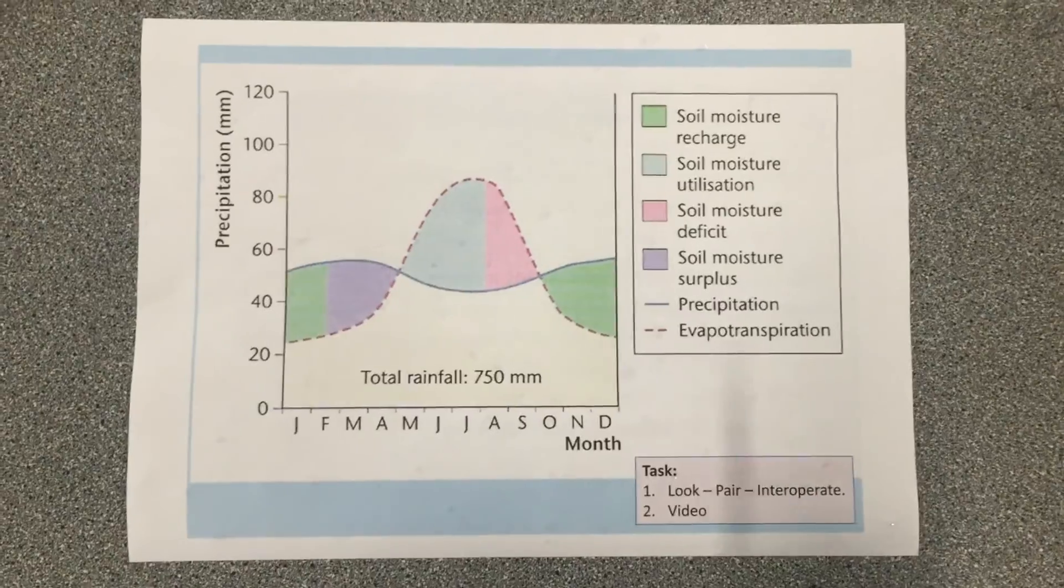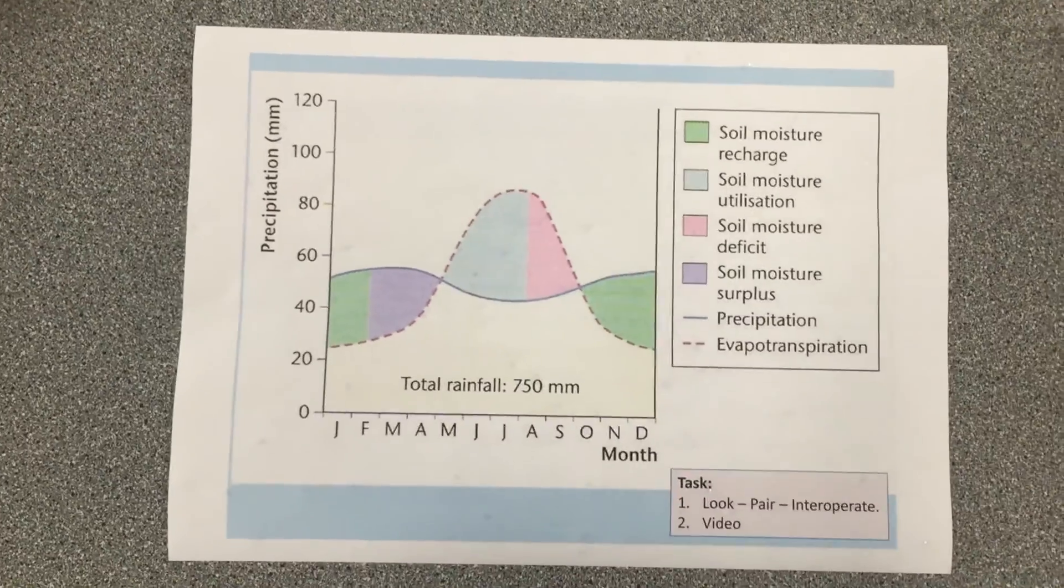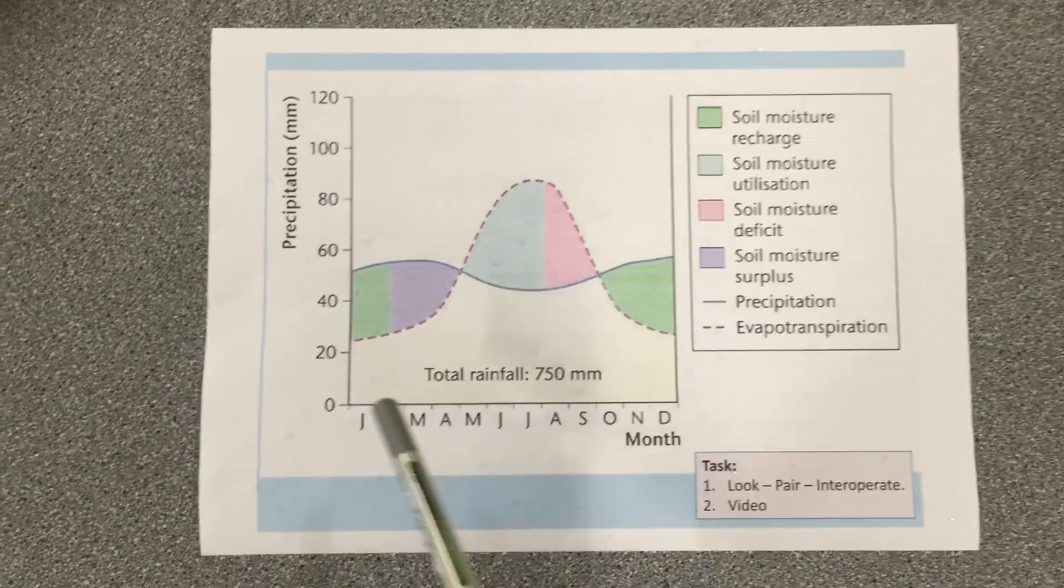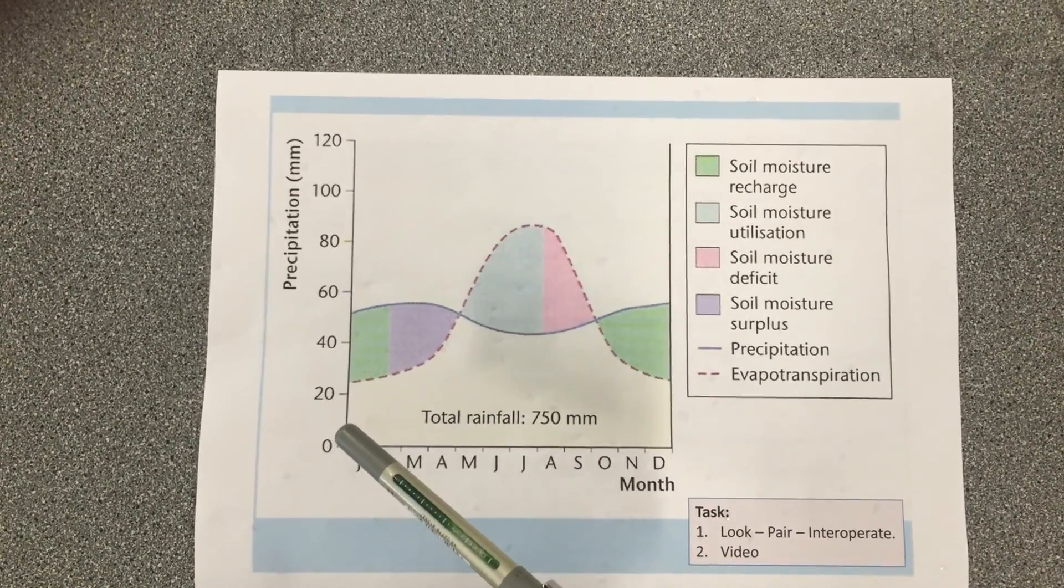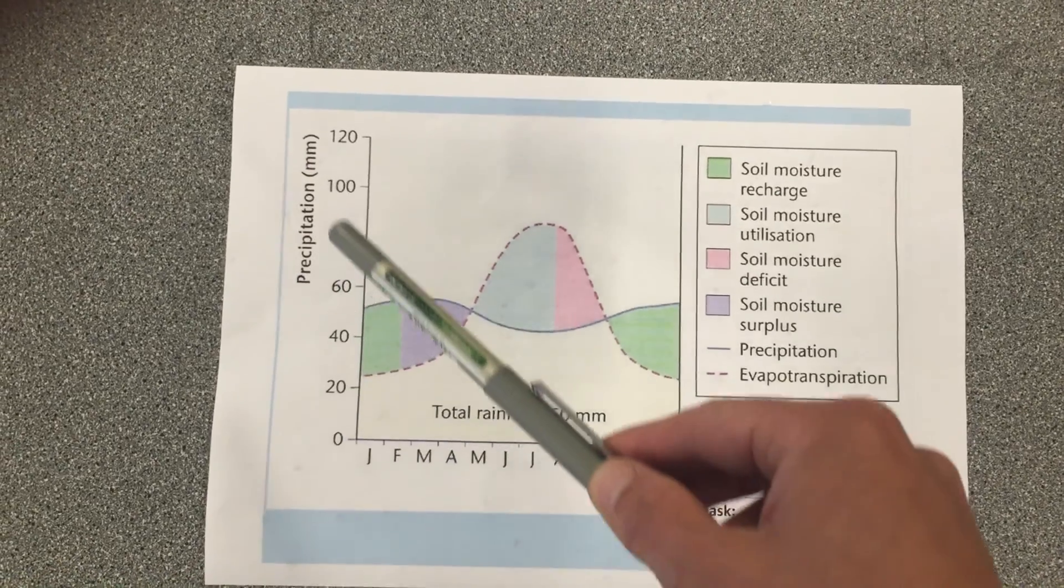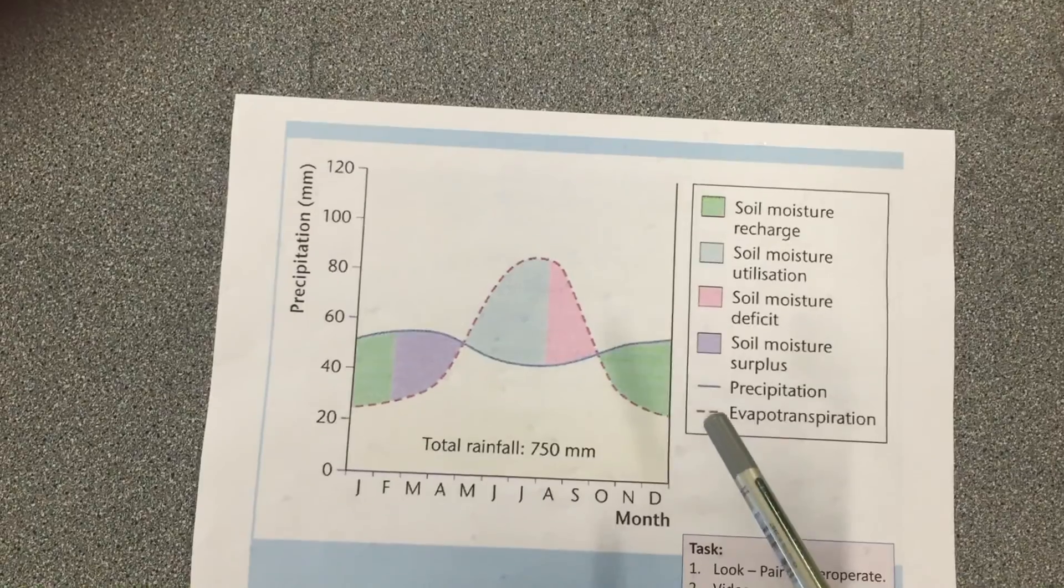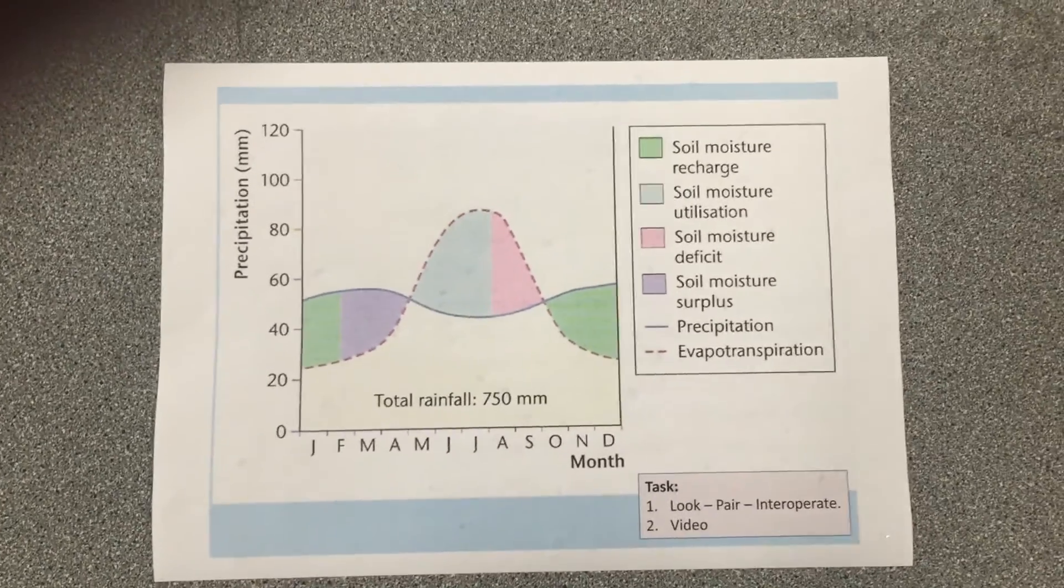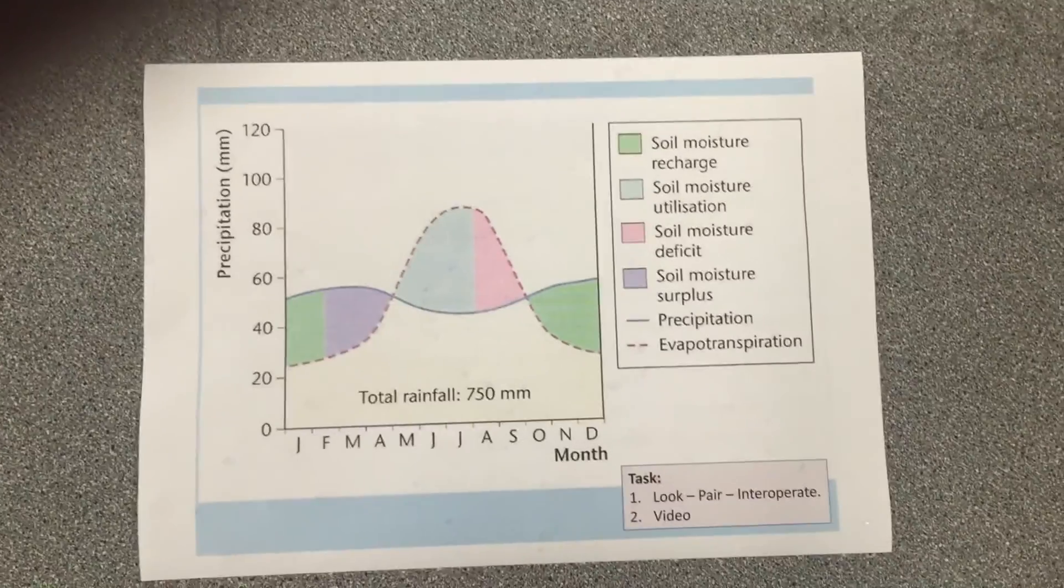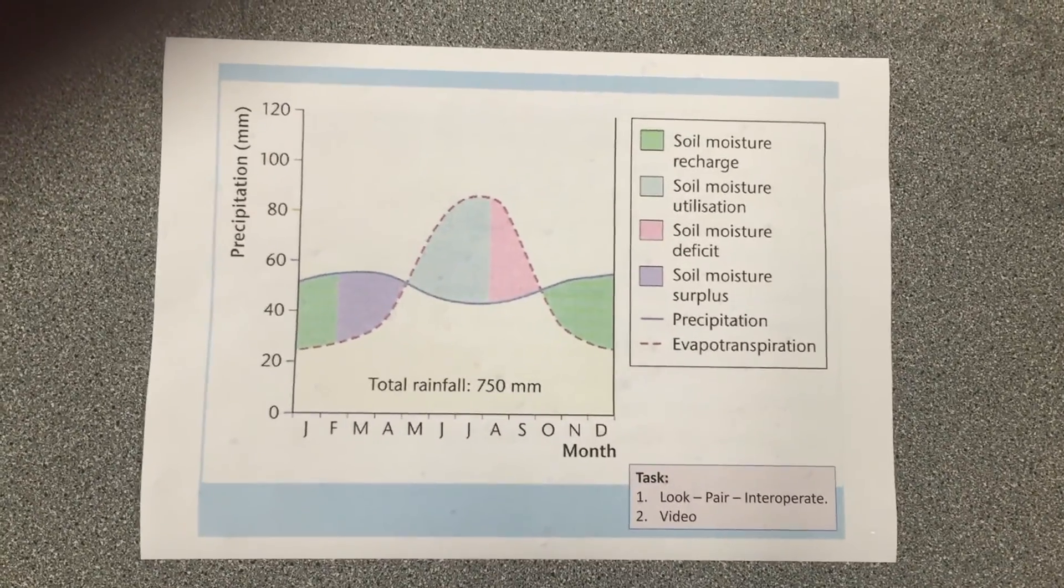As with any graph, first thing that we do is we look at the title. This one actually doesn't have one, but it would say water budget. You need to look at your axes, so we've got our months running along the bottom, and we've got two things going on: precipitation in millimeters and a line which denotes the amount of evapotranspiration. If you look carefully at the key, you can see that our blue line represents the amount of precipitation and our red line represents the amount of evapotranspiration.